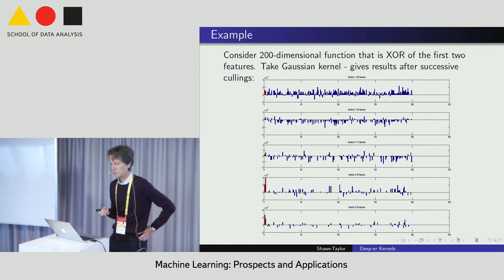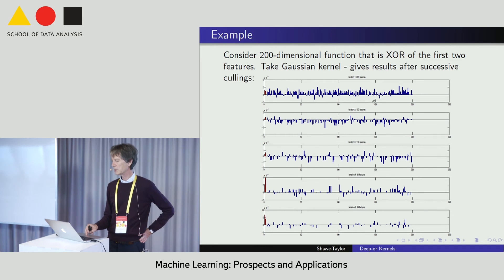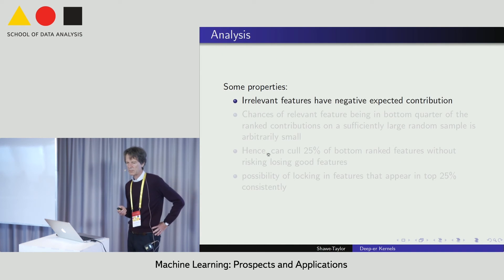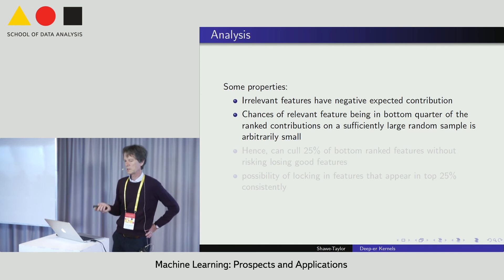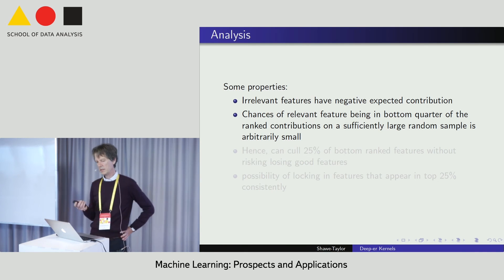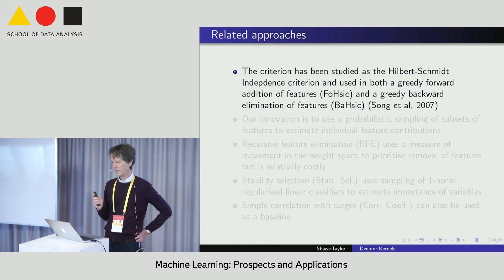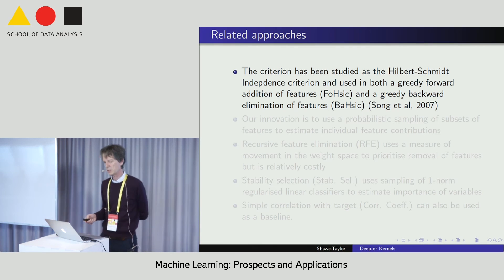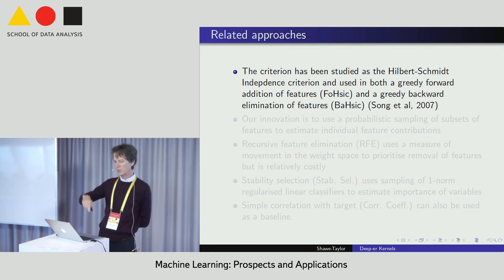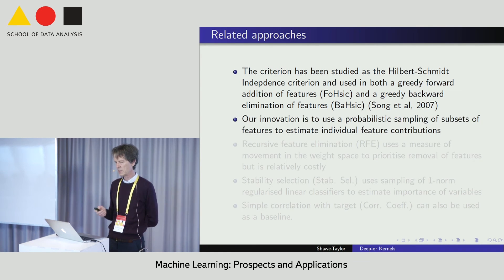This can be backed up by analysis: irrelevant features have negative expected contribution, and the chances of relevant features being in the bottom quarter of ranked contributions is arbitrarily small. So we can cull the bottom-ranked features and lock in the top-ranked ones. This is related to the Hilbert-Schmidt independence criterion and has been used for greedy forward addition or backward elimination of features. The innovation here is probabilistic sampling of subsets to get the contribution measured.